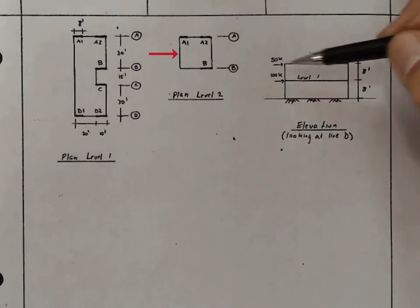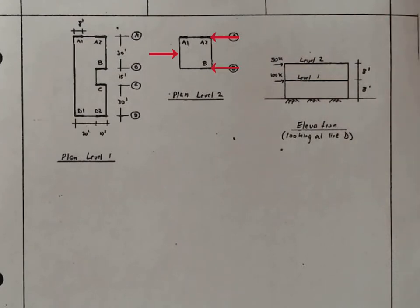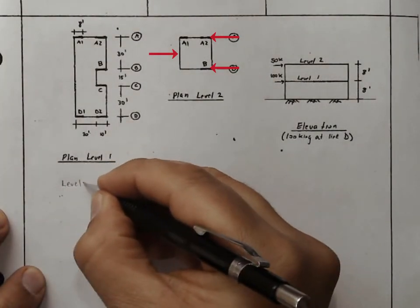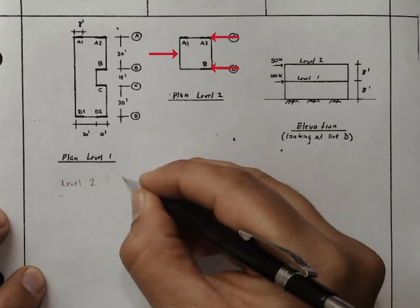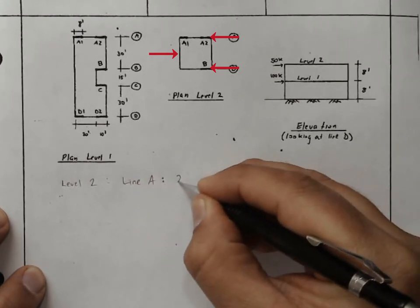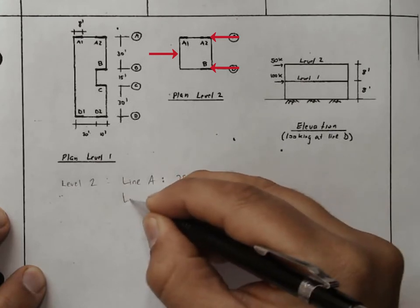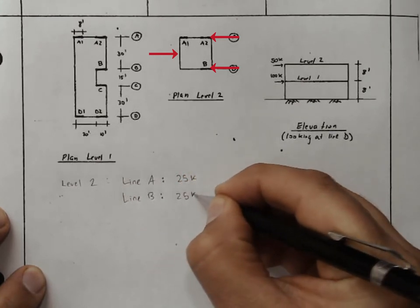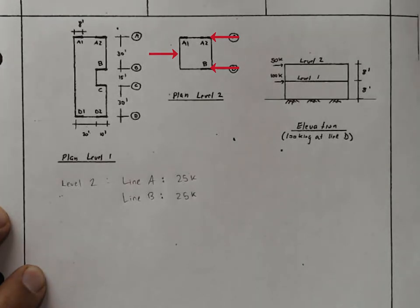In the top story, we don't have to do anything different than the basic physics that I showed you. We have a 50 kip force that divides out evenly to line A and B. So we have here for level 2, line A, 25 kips, line B, 25 kips.